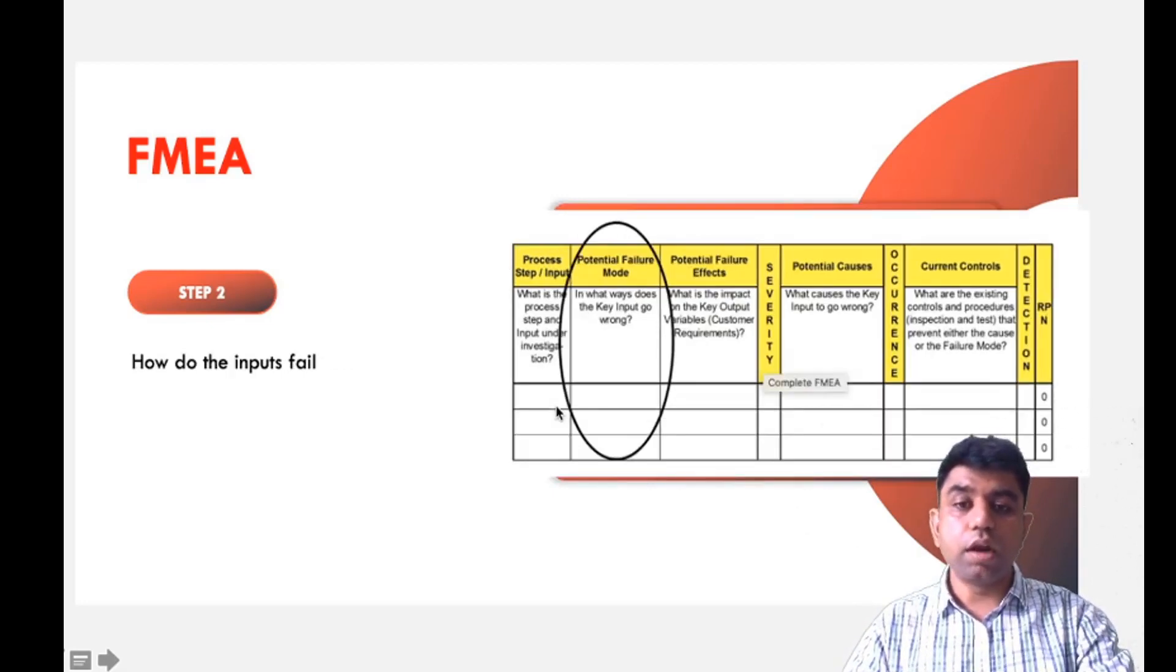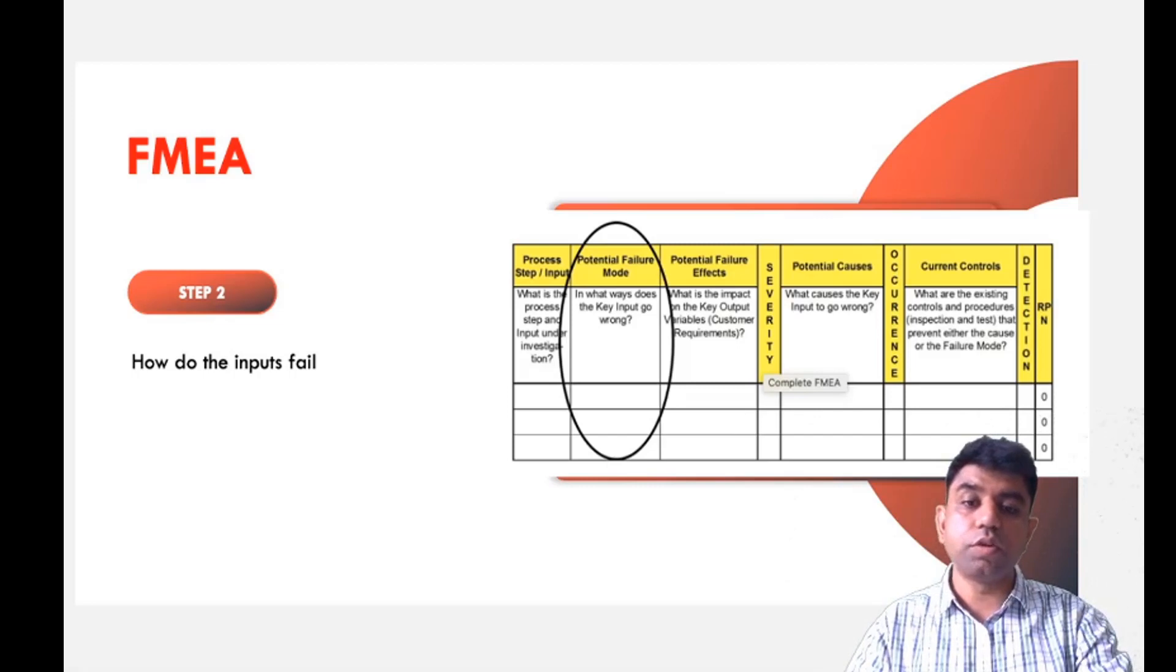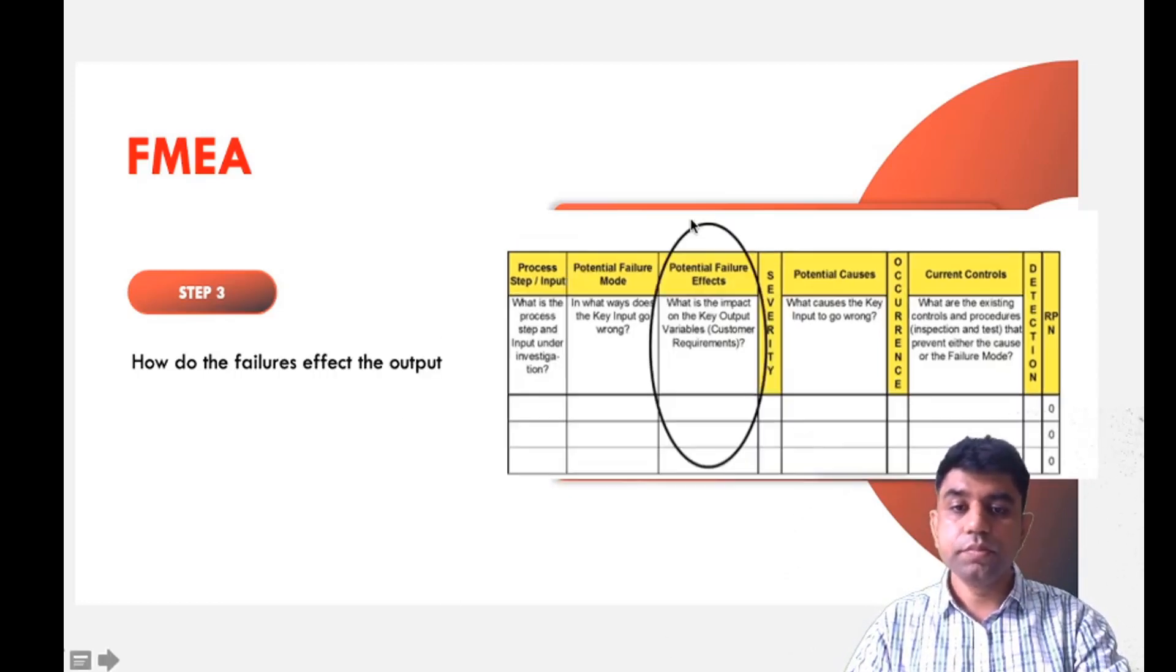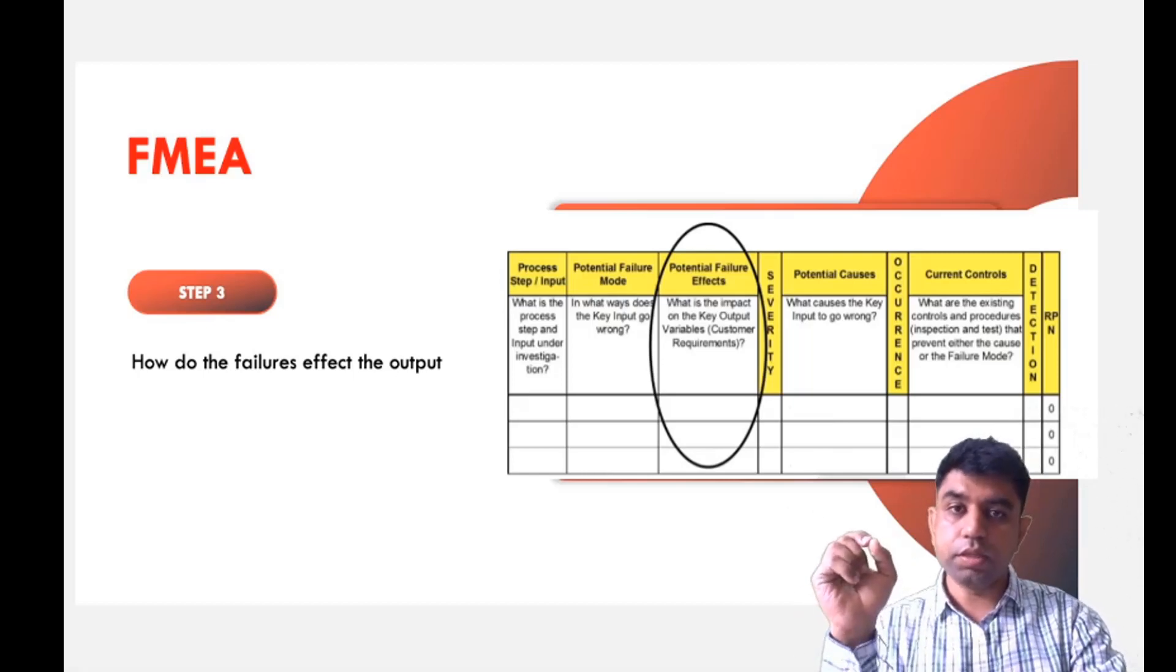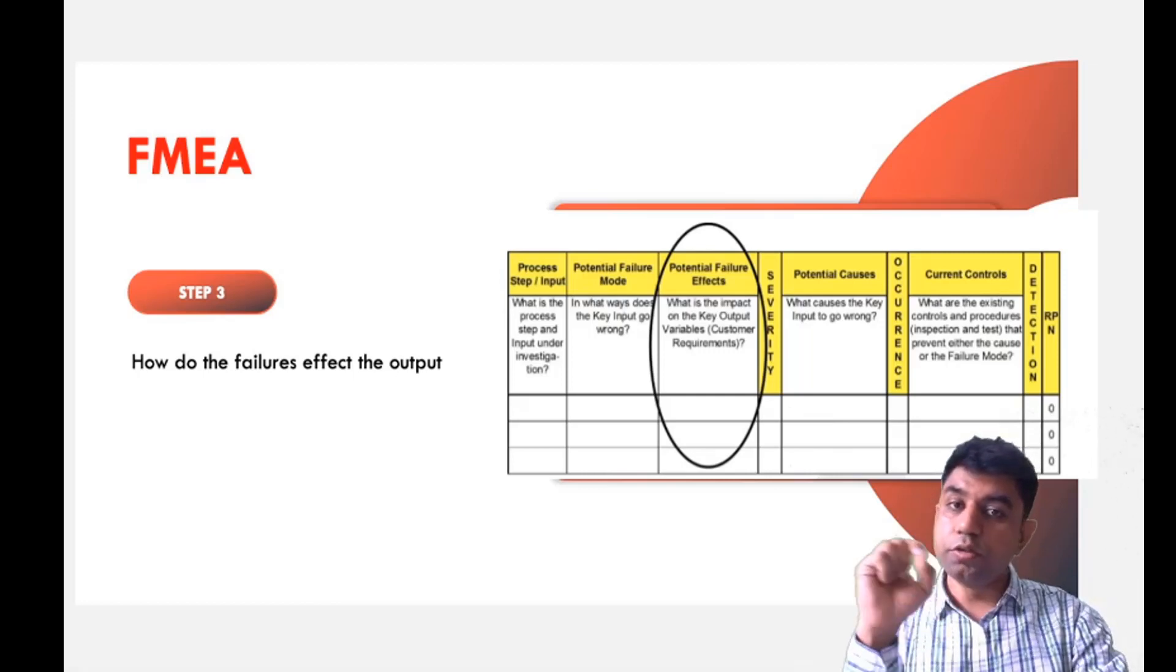The next step is to enter how the inputs fail. If we are doing any particular task, which are the different possibilities of failure or in what ways does the key input go wrong? We planned something, but which things can fail our process? We write that in the second step. In the third step, we write how the failures affect the output.